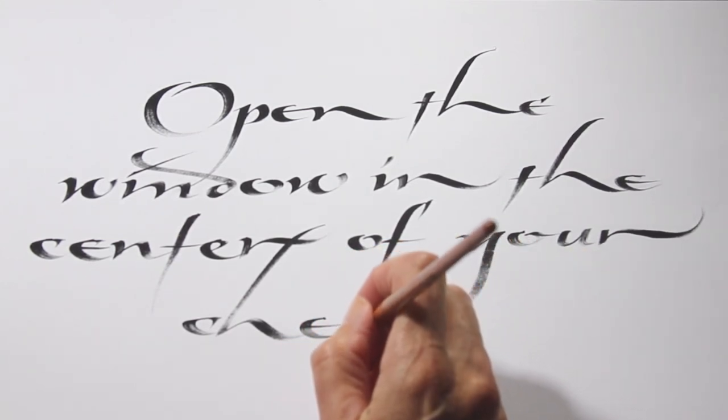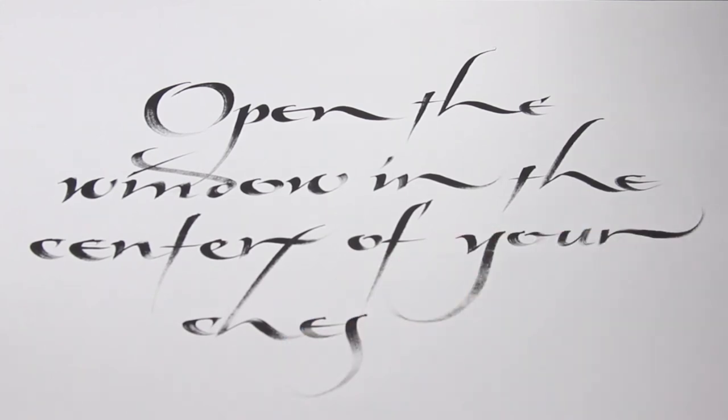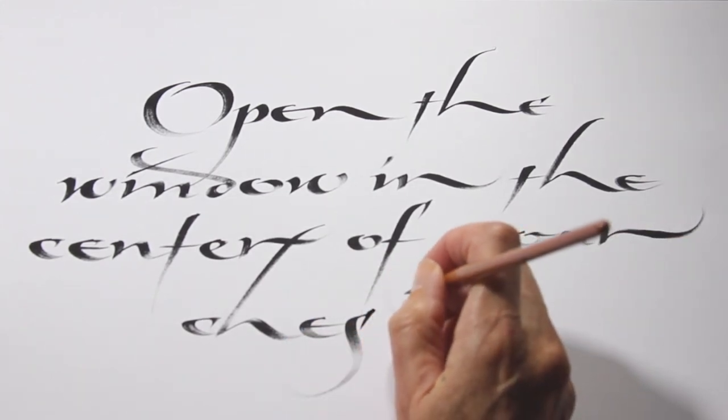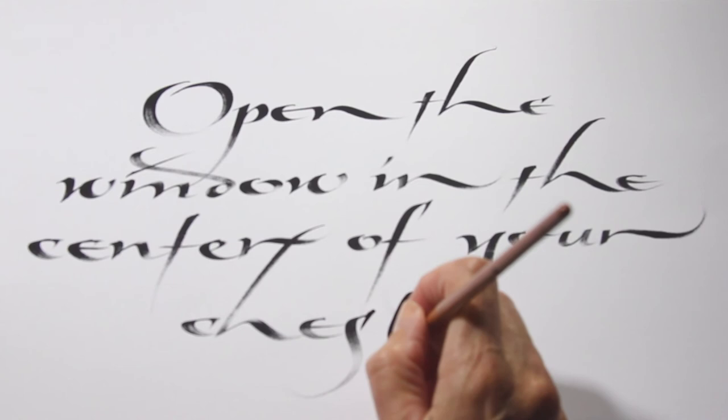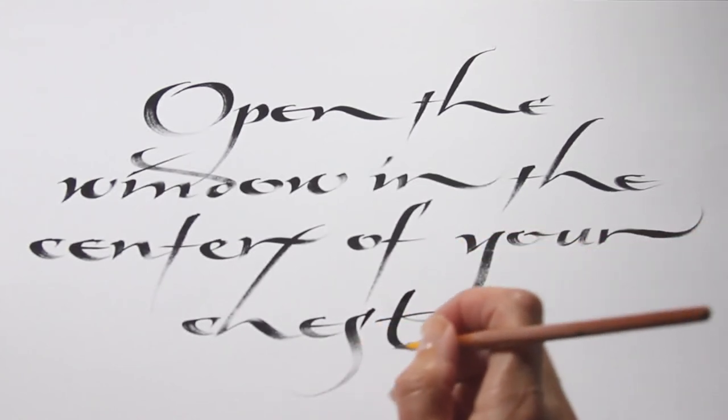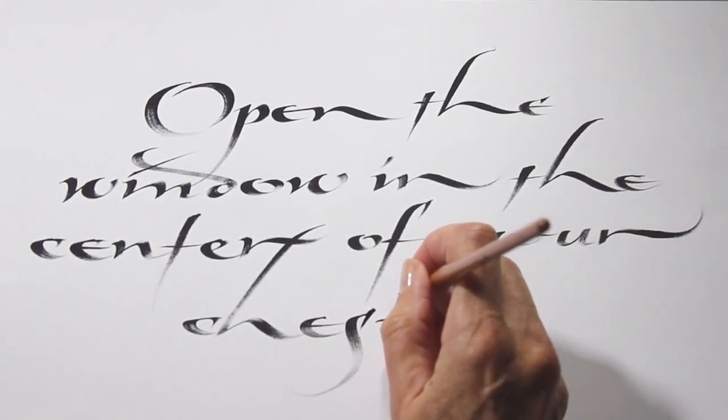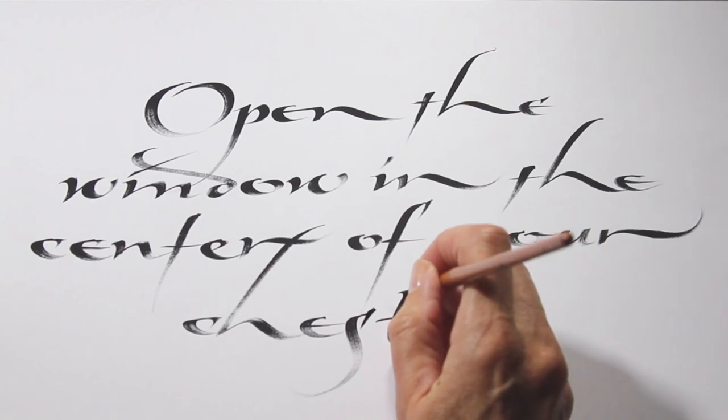There's a really pulled out S, and a flourish on the T crossbar. Open the window in the center of your chest. A quote by Rumi in Gullwing.